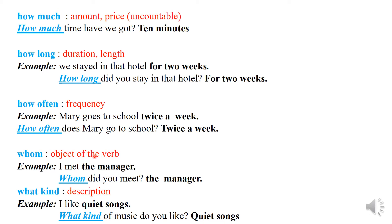'Whom' is for the object of the verb — it is for a person but as an object. Remember, 'who' is for a person as subject. Example: I met the manager. Whom did you meet? The manager. The manager comes after the verb, so it is the object, not the subject. When the person is the object after the verb, we say 'whom.'